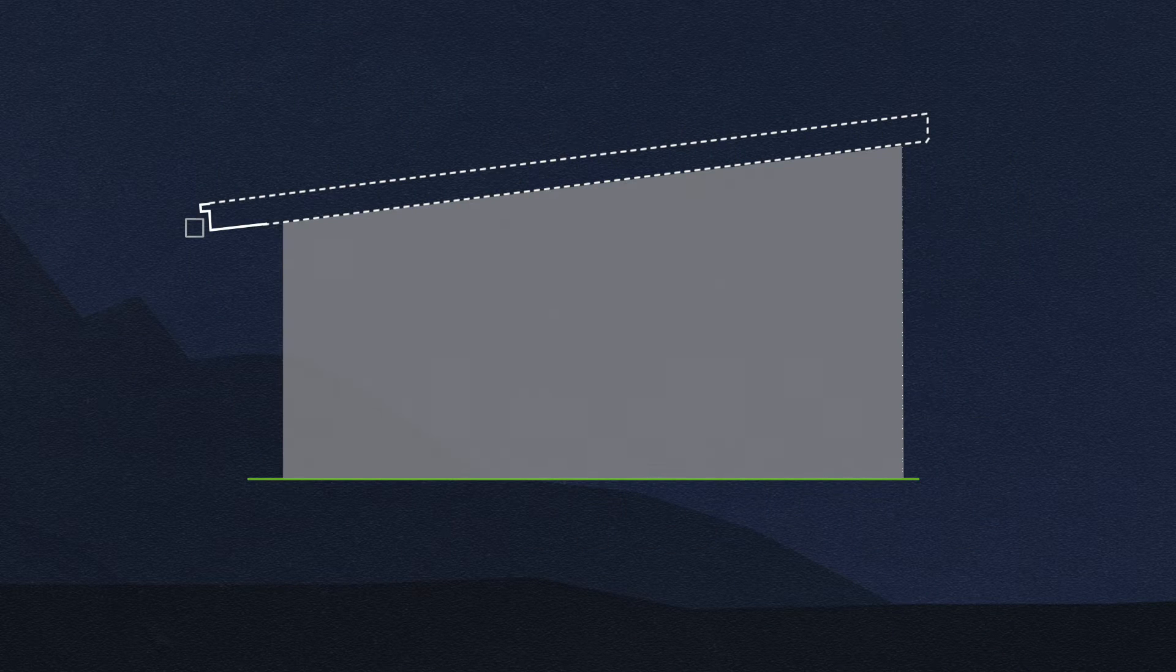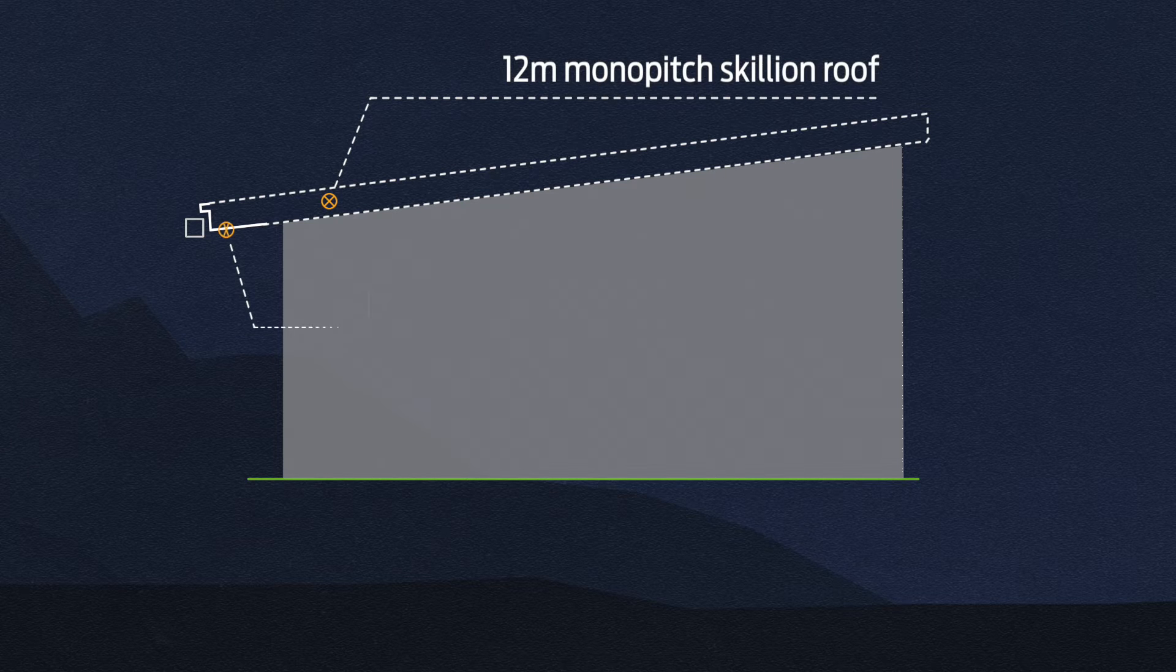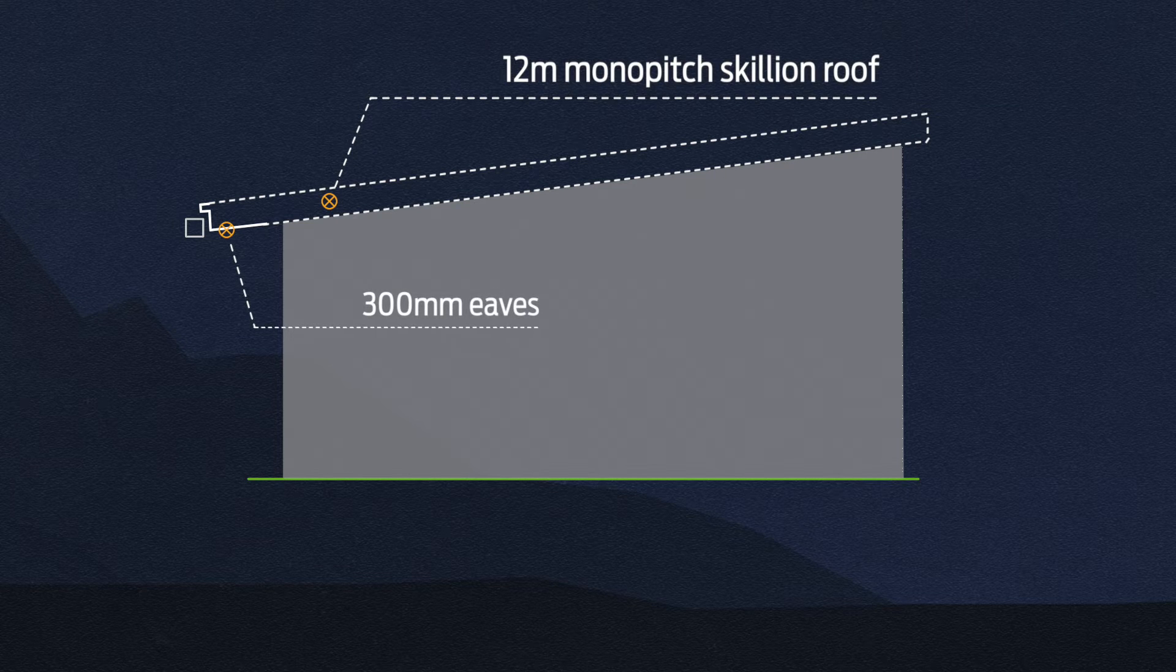Our virtual building cross-section looks at the airflow of a 12 meter long monopitch skillion roof with and without 300 millimeter eaves.